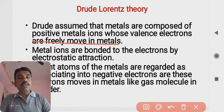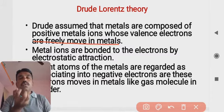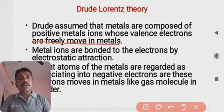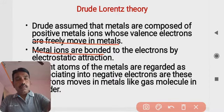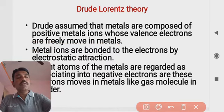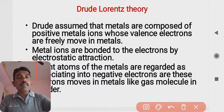What Drude suggested — Drude's assumption — is that metals are composed of positive metal ions. These positive metal ions are bonded to the electrons by electrostatic attraction. The valence electrons are free to move within the metal, while the positive ions are bonded strongly through electrostatic attraction.